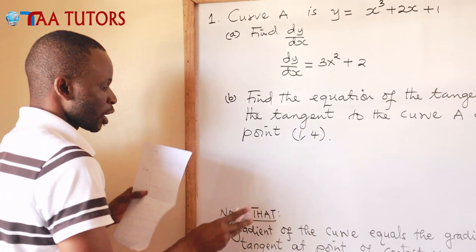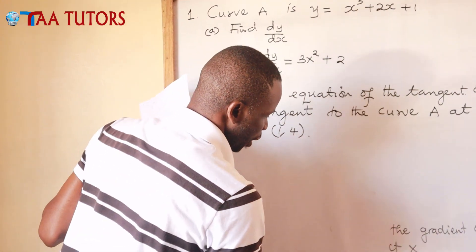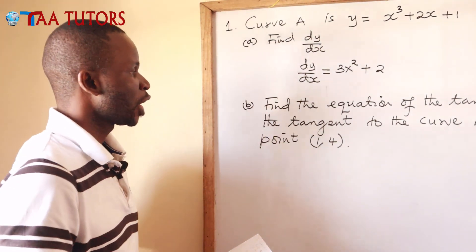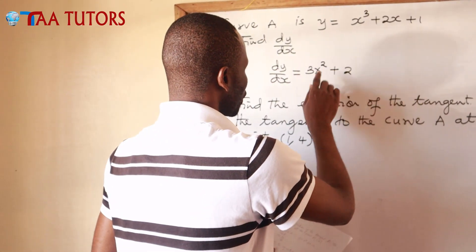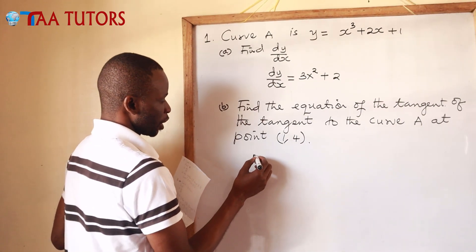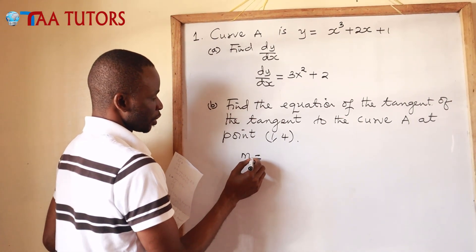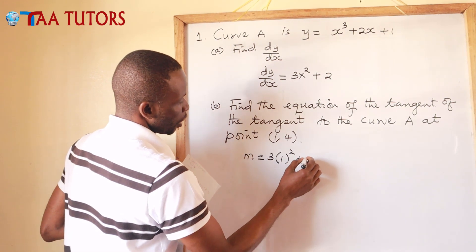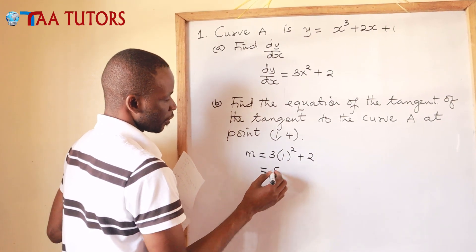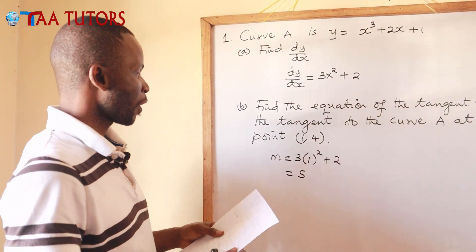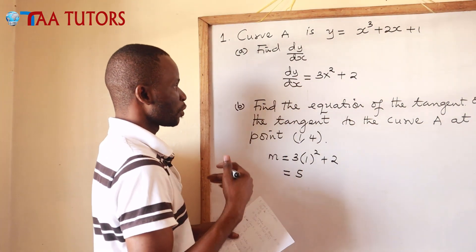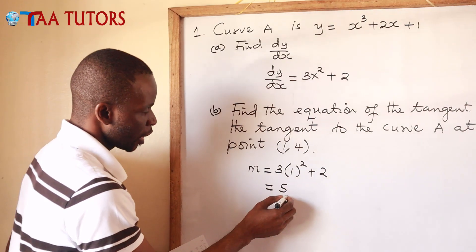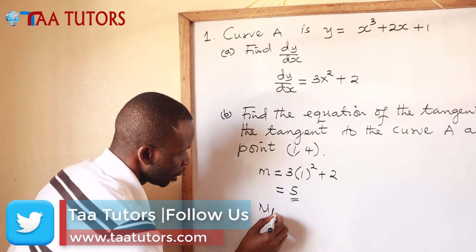The point of contact between the curve and the tangent is (1, 4). We use the gradient function to get the gradient: m equals 3 times 1 squared plus 2, which is 3 plus 2 equals 5. The gradient of the curve equals the gradient of the tangent at the point of contact, so the gradient of the tangent mt equals 5.